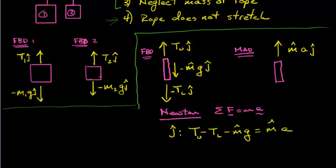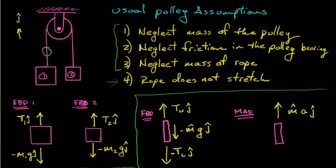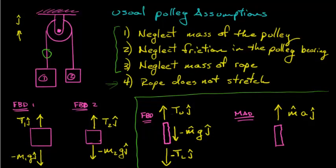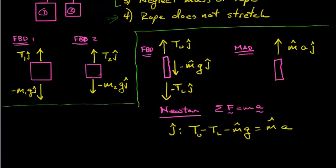But let's go back to my assumptions. I said I'm going to neglect the mass of the rope. There's assumption number three. So if we can safely neglect the mass of the rope, what happens? This weight goes away, because I only have weight if I have mass. And my inertial terms also go away. So therefore, I have T upper minus T lower equal to zero.